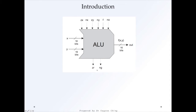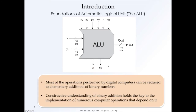The ZR and NG are comparison operators used for jumping to locations later. Most of the operations performed by digital computers can be reduced to elementary additions of binary numbers, which is the X and Y coming in, with the instruction set operating on the two values. The constructive understanding of binary addition holds the key to the implementation of numerous computer operations that depend on it.